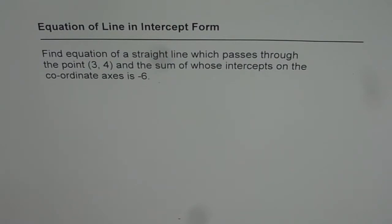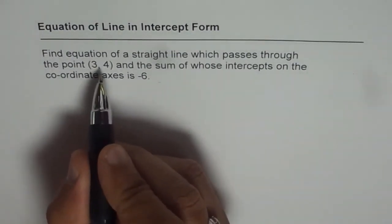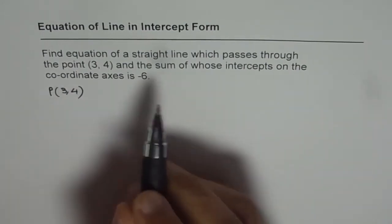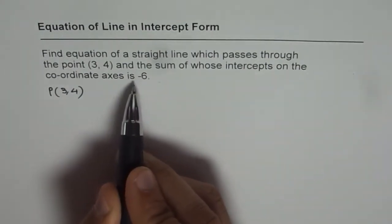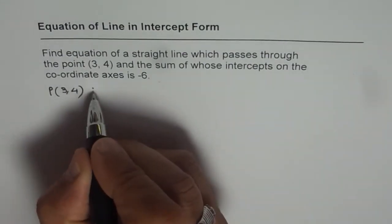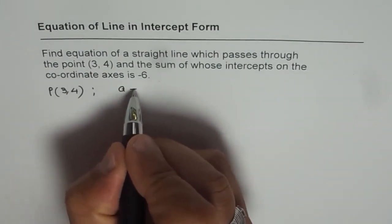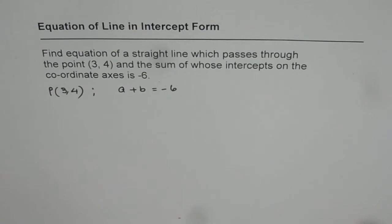This time we are going to solve this problem using equation of line in intercept form. What we are given here is that the line goes through the point (3,4). The point P on the line is (3,4) and sum of whose intercepts on the coordinate axis is -6. Let us say a and b are x and y intercepts then a + b = -6. This is what is given to us.